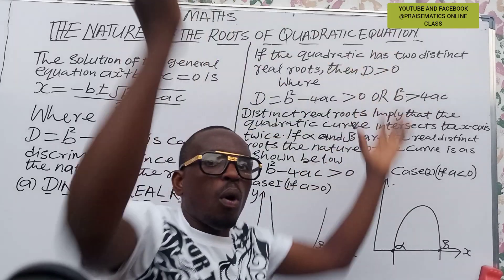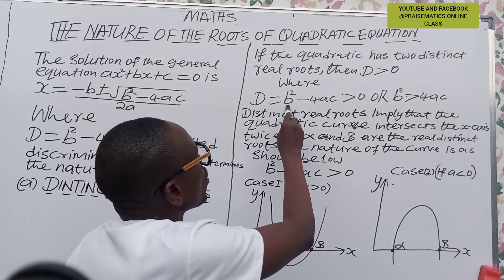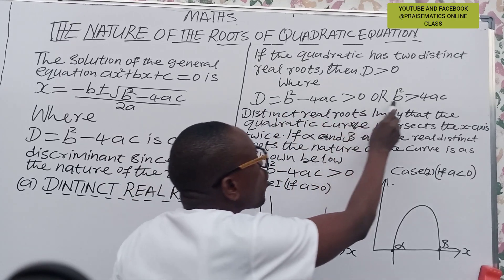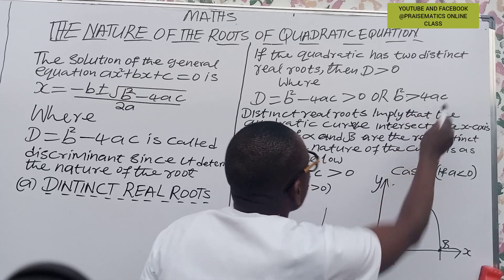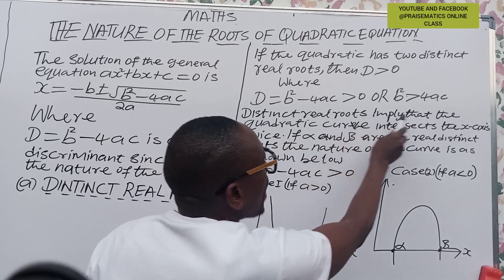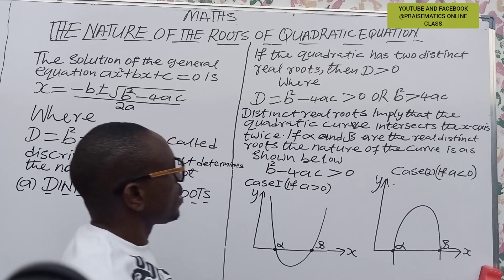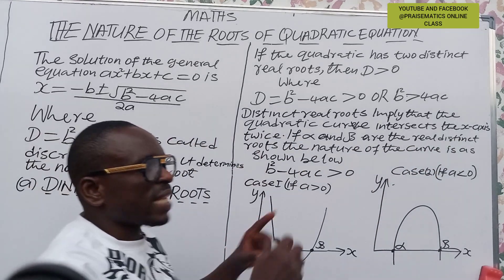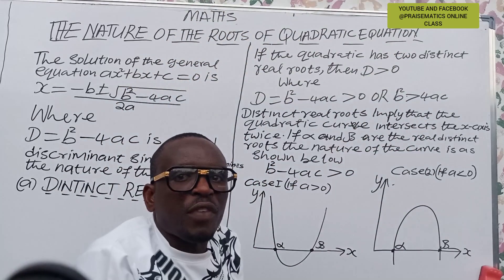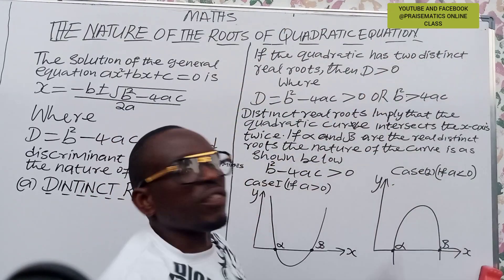In other words, D = b² − 4ac > 0, or equivalently b² > 4ac. This state of distinct real roots implies that the quadratic curve intercepts the x-axis twice. The quadratic curve will pass or meet the x-axis at two different points — the curve will cross the x-axis at two different places.